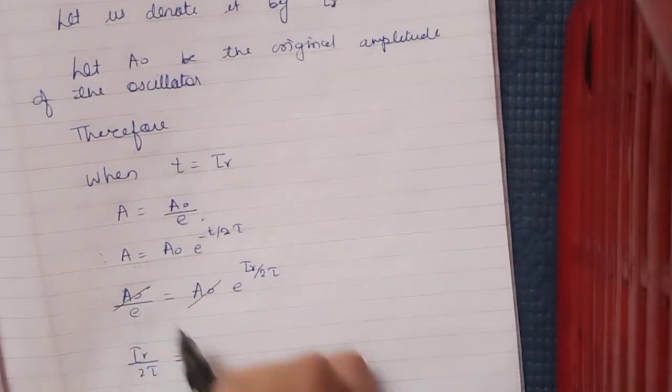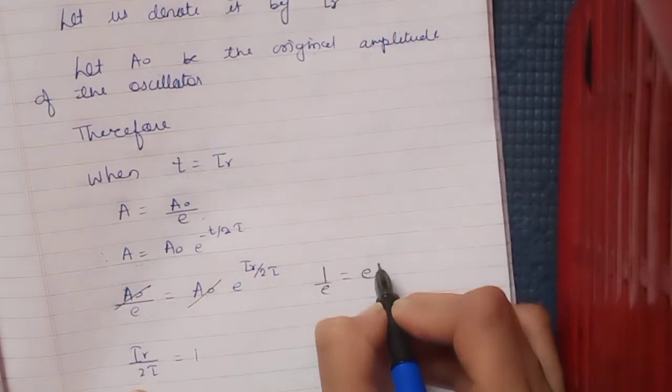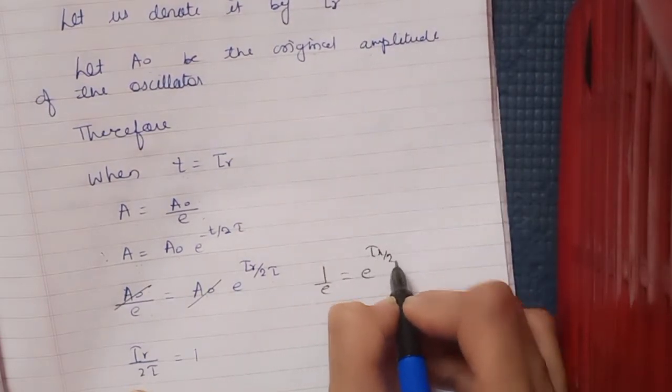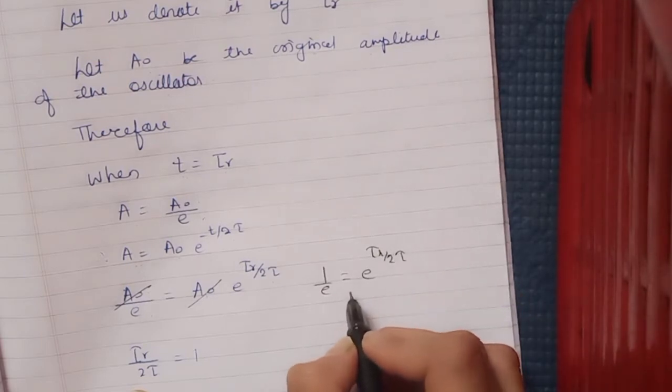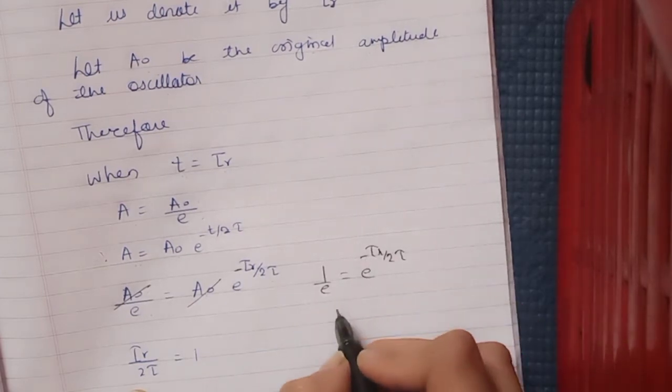A₀ cancels, so we get 1/e = e^(-τᵣ/2τ). I will take the reciprocal of this.